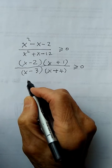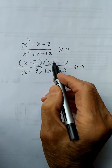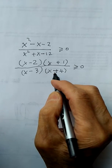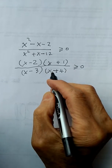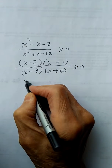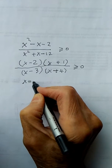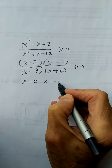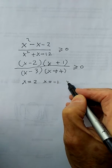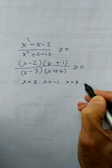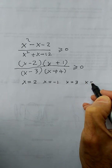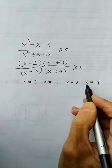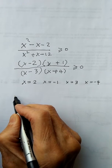Next, figure out the zeros from the numerator and also the zeros from the denominator. The zeros are x equals 2, x equals negative 1, x equals 3, and x equals negative 4. You now have 4 points — draw a number line and mark them: negative 4, negative 1, 2, and 3.